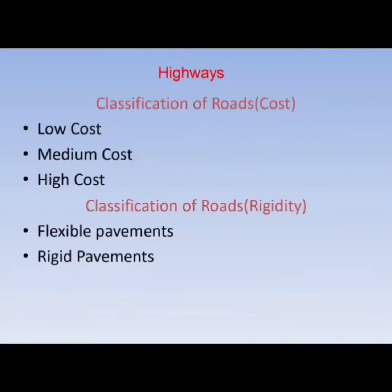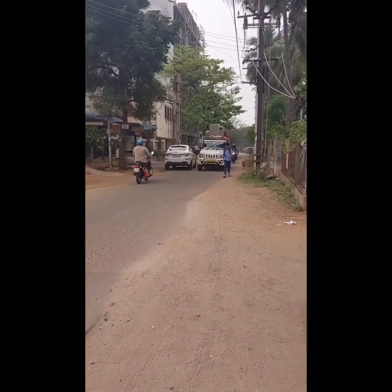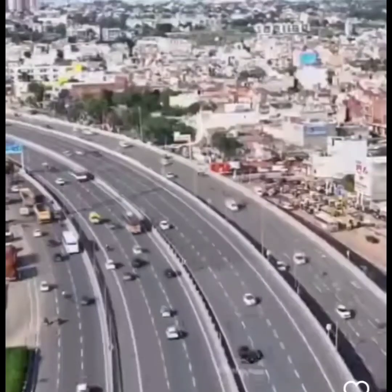Classification by cost includes low cost, medium cost, and high cost roads. Classification by flexibility includes flexible roads such as bitumen roads, and rigid pavements or concrete roads. In single-lane roads, vehicles have to move to the shoulder while crossing each other, whereas in multi-lane roads vehicles can pass easily.